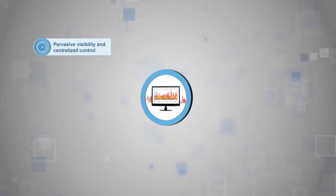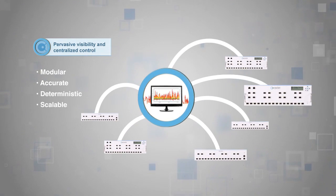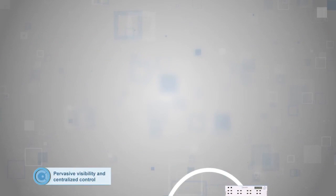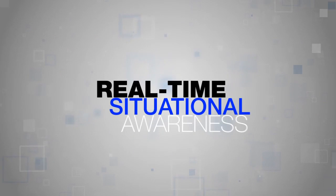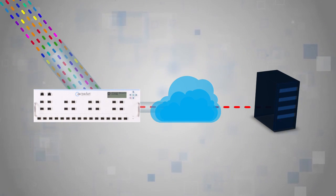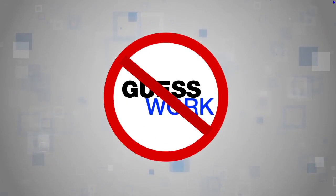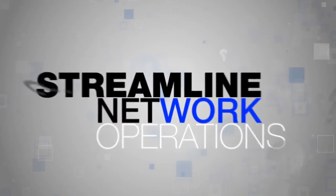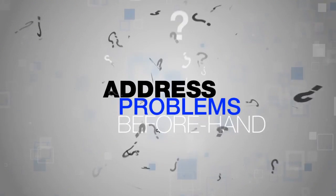With a CView device as your centralized network tools hub, you improve real-time situational awareness to your infrastructure. By selective forwarding of network traffic on demand to where it is needed, you're able to eliminate guesswork and confusion, streamline your network operations, and address problems before they impact end users.